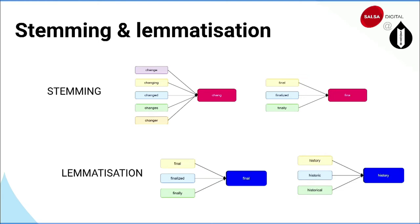Next, NLP performs stemming and lemmatization — this is crucial because without it you can't understand the meaning of a word. Stemming gets the root stem of a word by removing suffixes and prefixes, but might not return a valid word. Lemmatization does the same but also checks the dictionary to verify the resulting word is correct. You end up with the proper base form of the word.